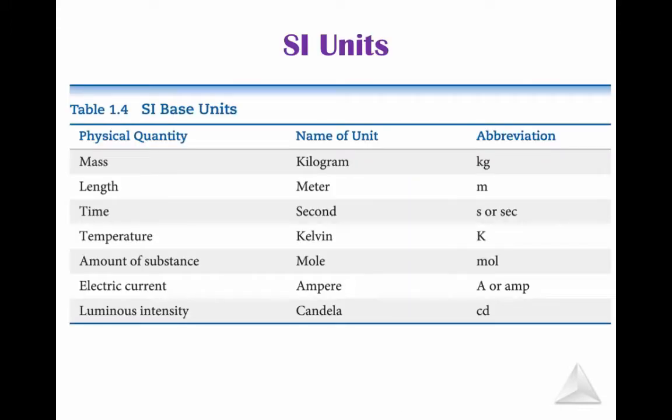So we have what are called the SI units. This is the international system. This is what scientists all over the world use. We're used to the English system, so we're used to measuring mass in ounces and pounds and tons, and measuring length in inches and feet and yards, or time in minutes, and temperature is the big one in Fahrenheit.